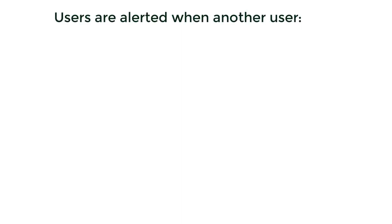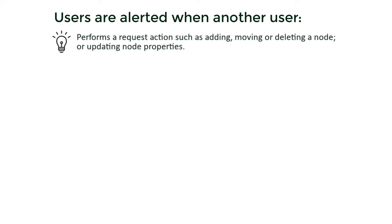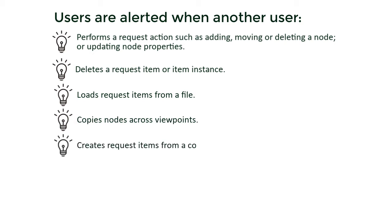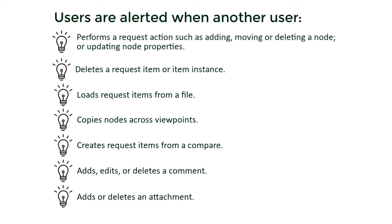Users are alerted when another user performs a request action such as adding, moving, or deleting a node or updating node properties; deletes a request item or item instance; loads request items from a file; copies nodes across viewpoints; creates request items from a compare; adds, edits, or deletes a comment; and adds or deletes an attachment.